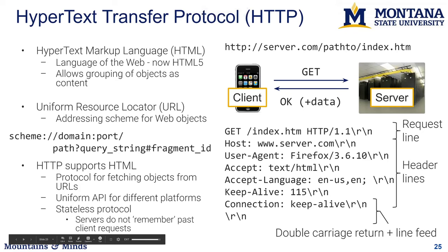HTTP stands for Hypertext Transfer Protocol and it is used to fetch all kinds of resources from the web. It basically organizes all the resources on the web under a set of addresses which can be accessed through HTTP. It is used by HTML — Hypertext Markup Language — and the two kind of work together. It's there for grouping objects as well as the content contained in those objects. The addressing scheme is based on Uniform Resource Locators or URLs, sometimes also known as Uniform Resource Identifiers or URIs.